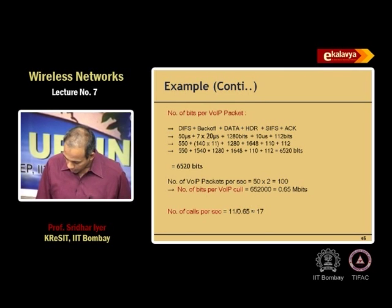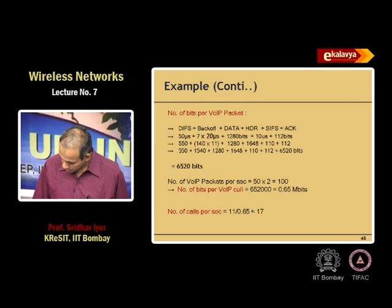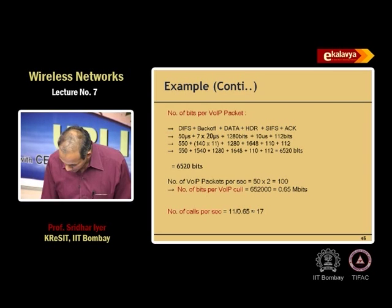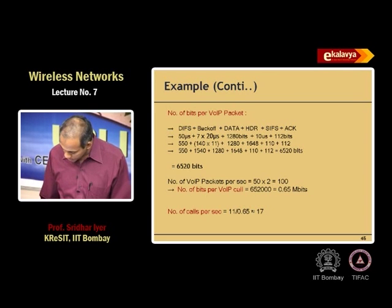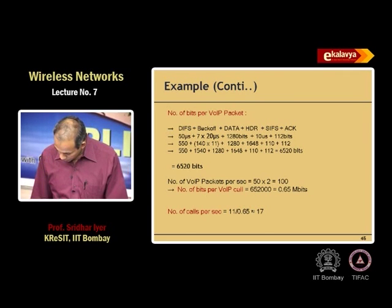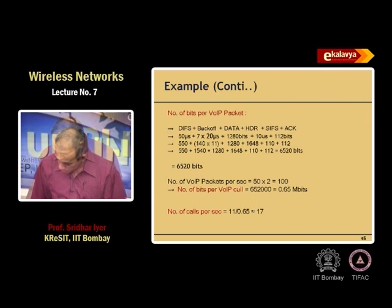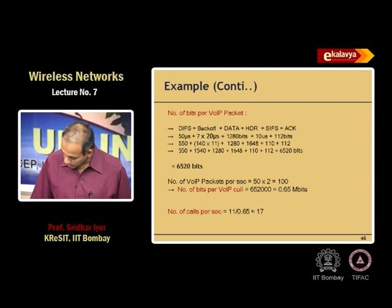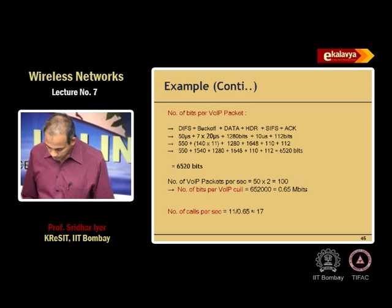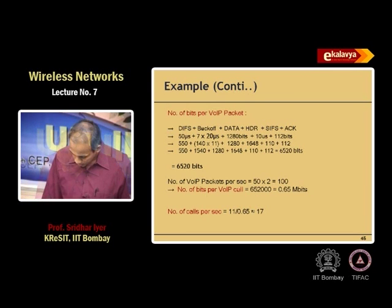This will be 550 bits — what is this — 140 into 11 is 1,540. Plus 1,280 plus headers. 1,280 plus 592 is 1,056... plus 110 plus 112. So this turns out to be 6,520 bits total per VoIP packet.